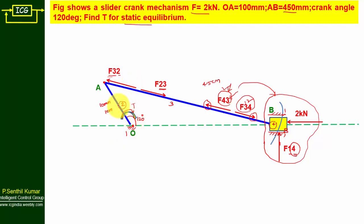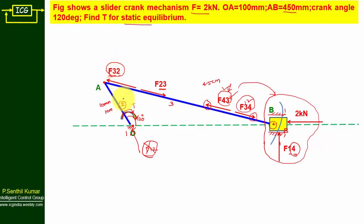For the crank free body diagram, sometimes people draw a single line and mark it as F12 — this is wrong. There is rotary motion at the crank, so torque equals a moment, and a moment means two parallel opposite forces. So we have F32 and then F12 drawn parallel to F32 but in the opposite direction. Since F32 is upward, F12 should be downward and parallel to it.